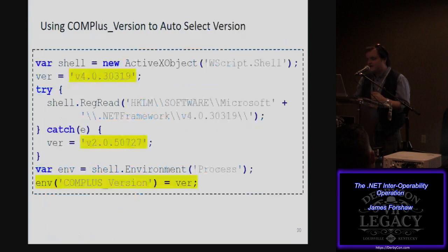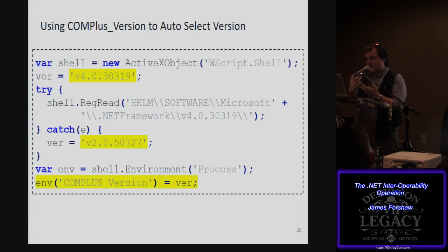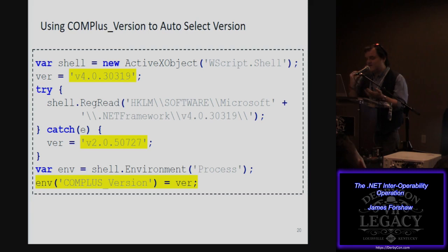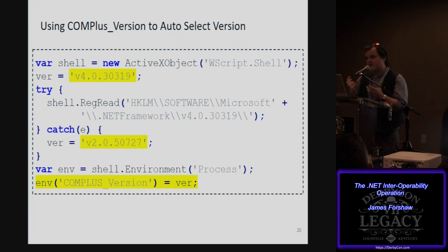Fortunately there's a way to bypass that. .NET has loads of configuration knobs, and the names of these environment variables betray its history — .NET was born out of COM+, which was born out of COM. The environment variable is COMPLUS_Version. If you set that at the process level, you can explicitly specify a version string like version 4, and even though the .NET object is supposed to be instantiated by v2, the runtime will load v4 instead, giving you access to those COM objects.